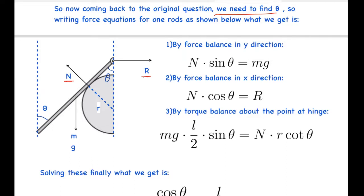First of all, by balancing forces in the y direction, what we get is N sin theta equals to Mg. Here the component of the N vertical direction will be N sin theta. Then, in x direction, what we get is N cos theta equals to reaction force R.